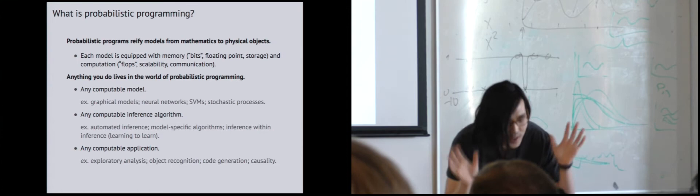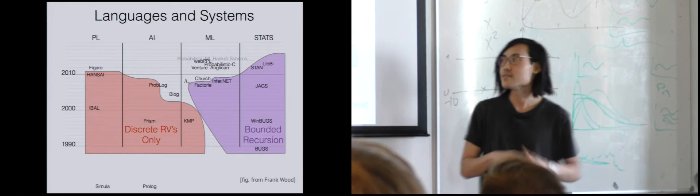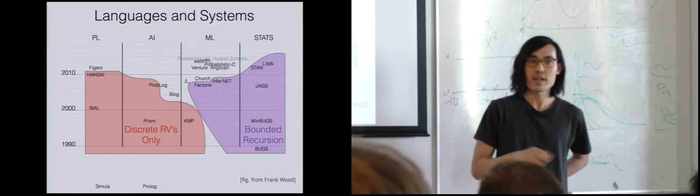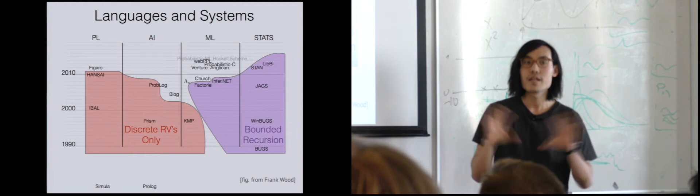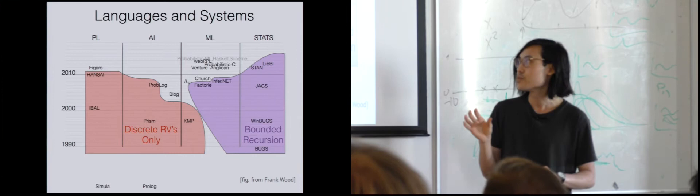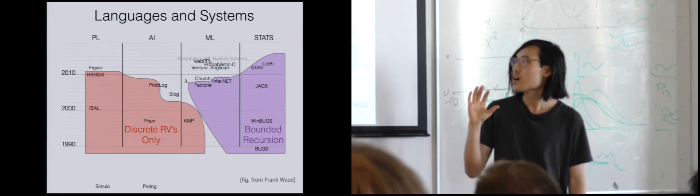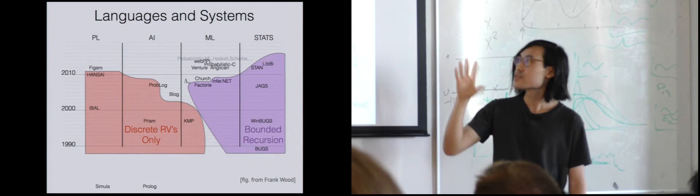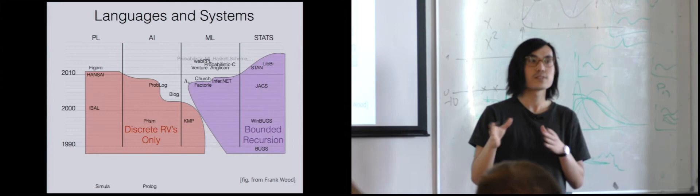There are a lot of systems for probabilistic programming, and it has been around for a while. This slide from Frank Wood, leader of Anglican, shows how he divided the many systems. There's a lot of work from computer science focused on symbolic algebra and discrete random variables, and a lot on practical computation from statistics — most known through BUGS and JAGS. As history has progressed, we've converged on more mainstream probabilistic programming languages: Stan, PyMC3, and Edward, which I'll be talking about today.